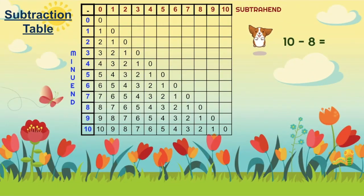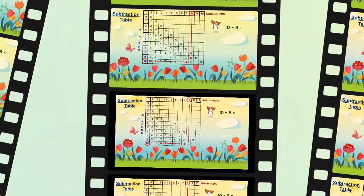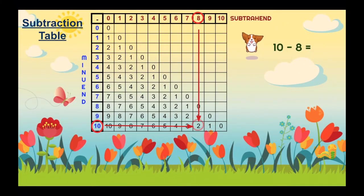Let's try to use it. For our first example, let's subtract 8 from 10. Let's find 10 from the first column and look for 8 in the first row. Now, let's draw the lines to find where they intersect. The answer is 2. So, our answer to 10 minus 8 is 2.